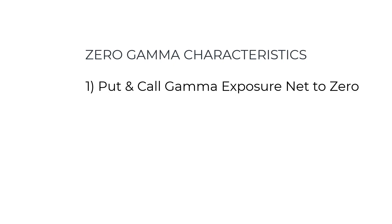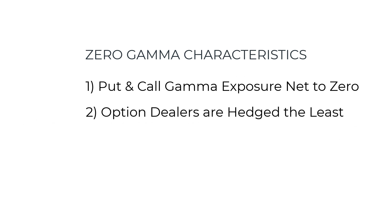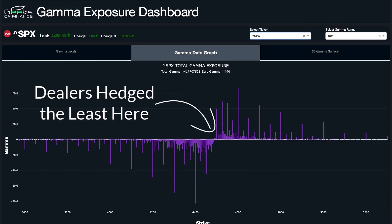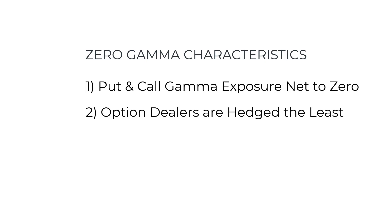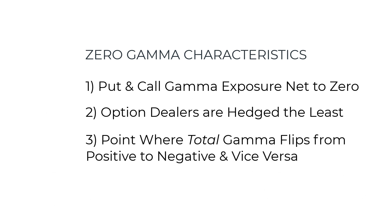Another characteristic of zero gamma is that it's the point at which dealers are typically the least hedged overall — that's why it's considered the neutral point in the market, where there's really no huge positive or negative skew. Another characteristic is that in a falling market, where price is going from higher to lower, zero gamma is the point where gamma is going to flip from positive to negative.